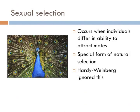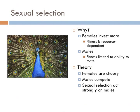Sexual selection is a special form of natural selection that occurs when individuals differ in their ability to attract mates. This tends to produce quite flamboyant characteristics in these species. Hardy and Weinberg ignored this for the simplicity of their mathematical model. Sexual selection occurs because females invest far more into the production of their offspring, so they can be very choosy as to who their mates are — in other words, eggs are expensive and sperm is cheap. So to impress females, males have to compete amongst themselves to prove that they are the cream of the crop.